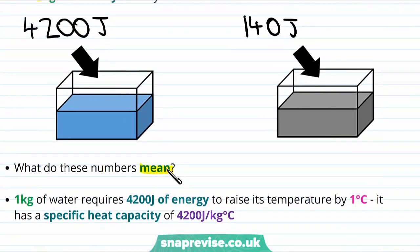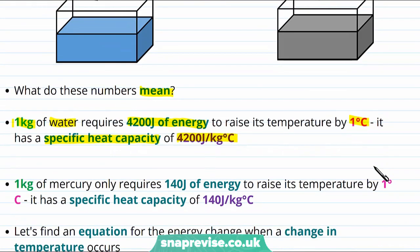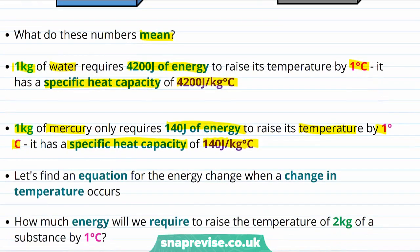Let's go over again what these numbers mean. One kilogram of water required 4200 joules of energy to raise its temperature by one degree centigrade, and therefore we say it has a specific heat capacity of 4200 joules per kilogram per degree centigrade. One kilogram of mercury only required 140 joules, giving a specific heat capacity of 140 joules per kilogram per degree centigrade. Notice that water has a higher specific heat capacity, meaning it takes more energy to heat it up.